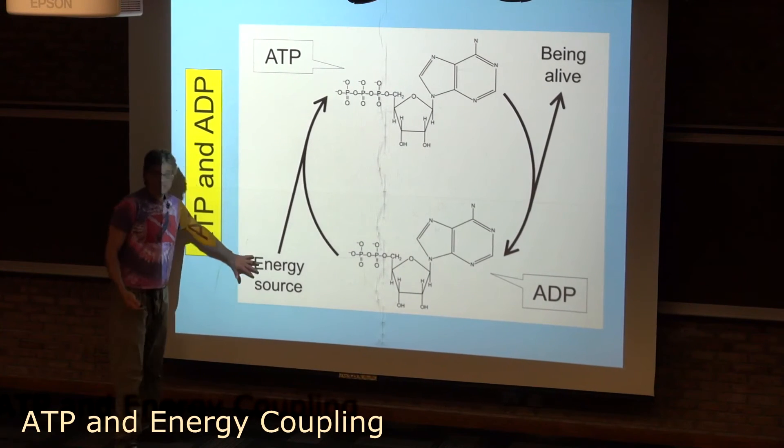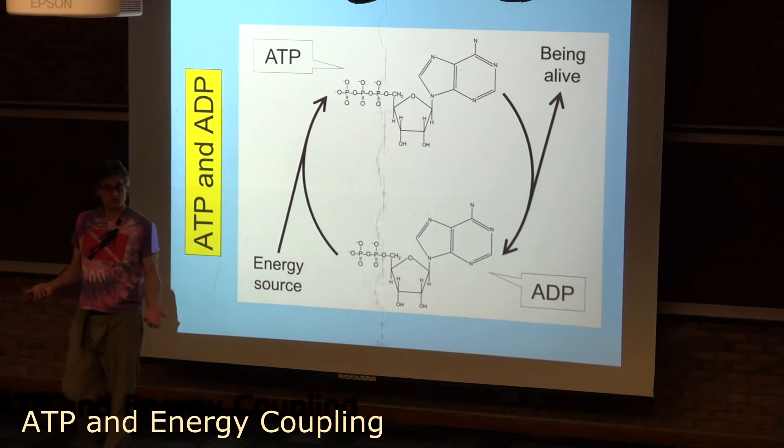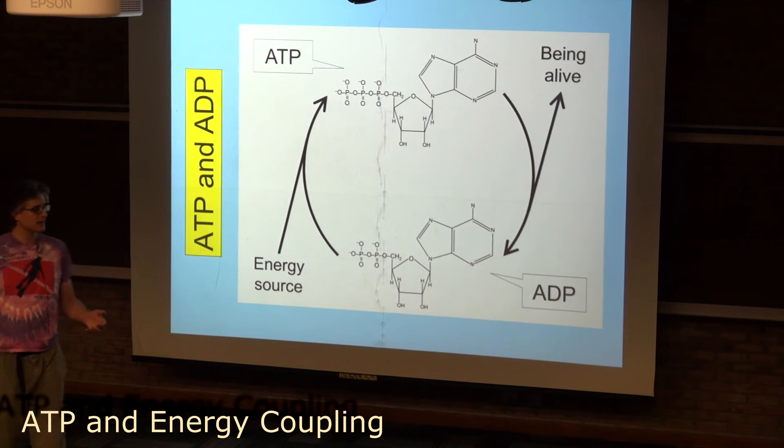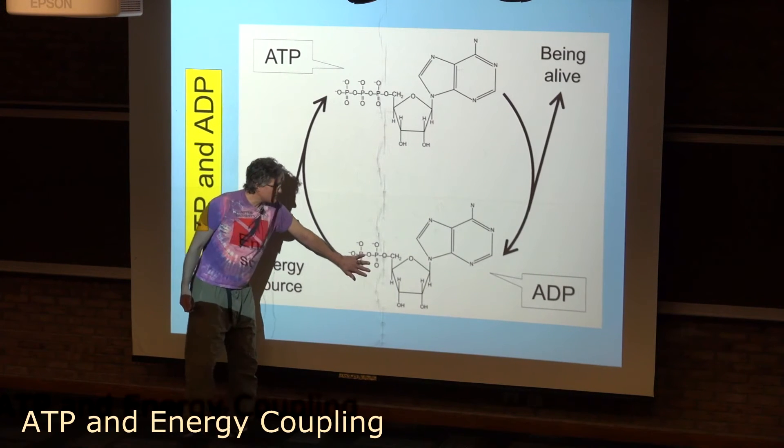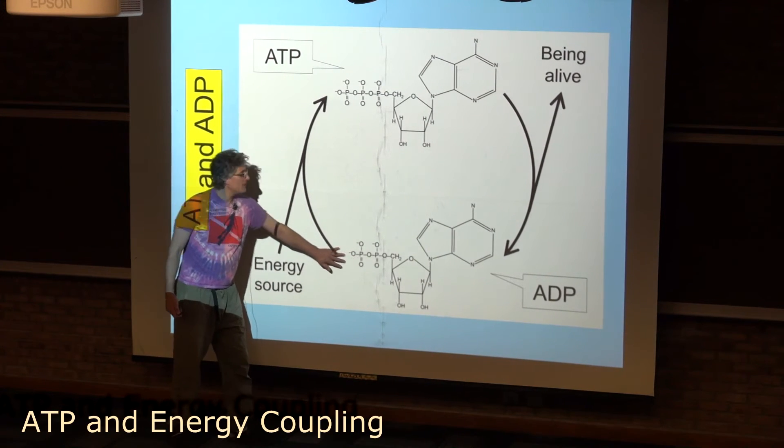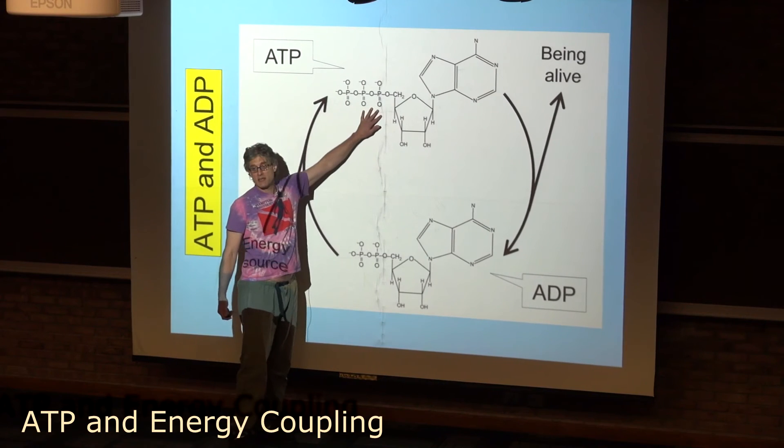Organisms take in energy sources - for us, that's food; for plants, that's light. And they use those energy sources to take ADP and phosphorylate it to make ATP.